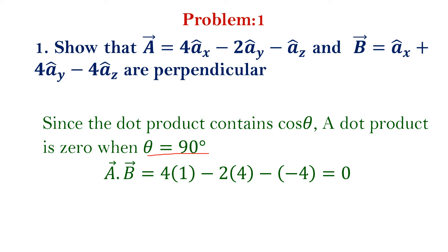Here, you have to find out A dot B. If A dot B equals 0, we can say that both vectors are perpendicular. A dot B is 4 times 1 minus 2 times 4 minus of minus 4, which is equal to 0. So we can say that both vectors A and B are perpendicular.